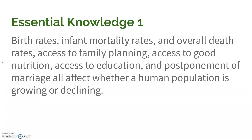Birth rates, infant mortality rates, and overall death rates, access to family planning, access to good nutrition, access to education, postponement of marriage — all these things are going to affect whether the human population is growing or declining. It's kind of a repeat from the TFR PowerPoint. We can determine if a population is growing or declining from age structure diagrams. So an inverted pyramid tells us birth rate is very low, infant mortality rate is really low, overall death rate is pretty low — a lot of family planning, good nutrition, education, and marrying in later years. A normal pyramid with a really wide base tells us the exact opposite.